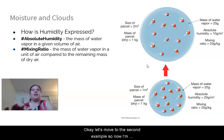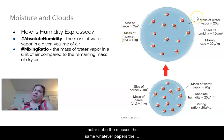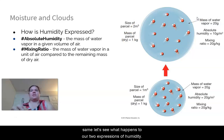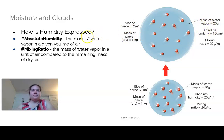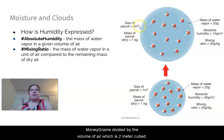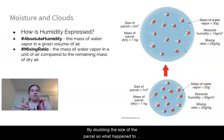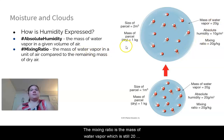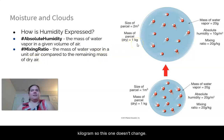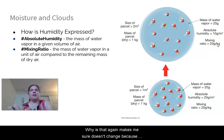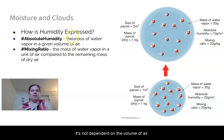Now let's double the size of the parcel to two meters cubed, keeping mass and water vapor the same. Absolute humidity drops: 20 grams divided by two meters cubed gives 10 grams per meter cubed — it dropped by half. But the mixing ratio doesn't change: it's still 20 grams of water vapor divided by one kilogram of dry air. Mixing ratio doesn't change because it's not dependent on volume — only mass of water vapor to mass of dry air.